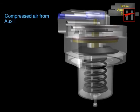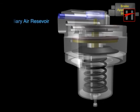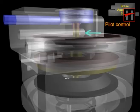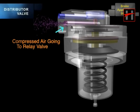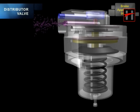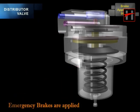Compressed air from the auxiliary air reservoir flows through the pilot control air pipe to the relay valve filling the brake cylinder. Emergency brakes are thus applied.